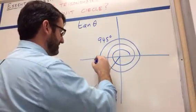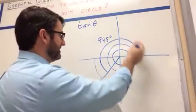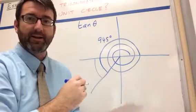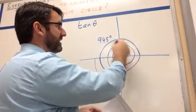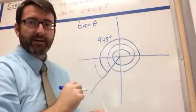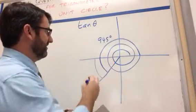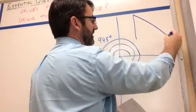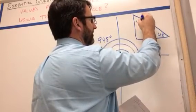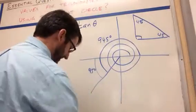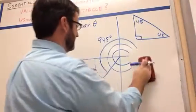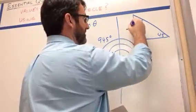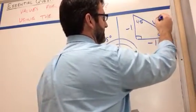This reference angle — just this piece — is 945 minus where we were after two and a half turns, which is 900 degrees (360 plus 360 plus another 180). So the reference angle is 45 degrees. We can use our 45-45-90 reference triangle to find the tangent. We're going backwards and down, so this is negative 1, this is negative 1, and the hypotenuse is square root of 2.